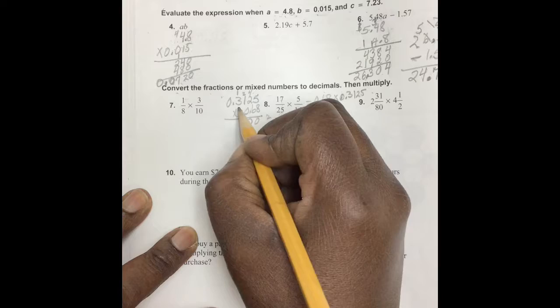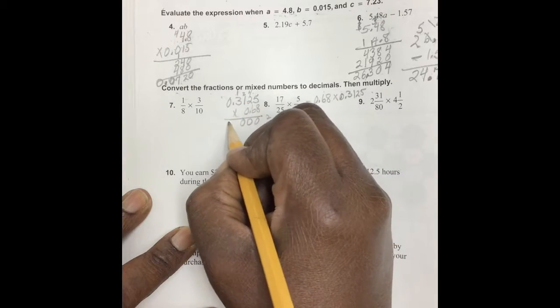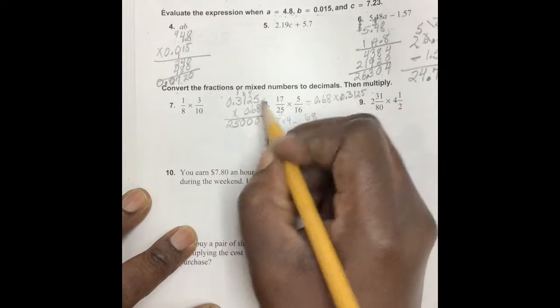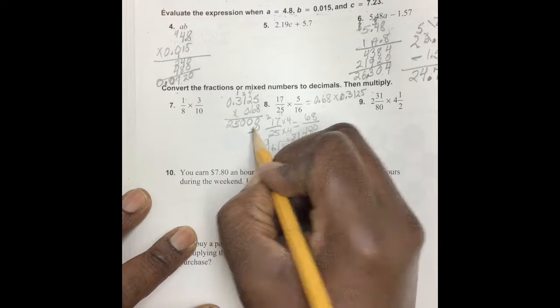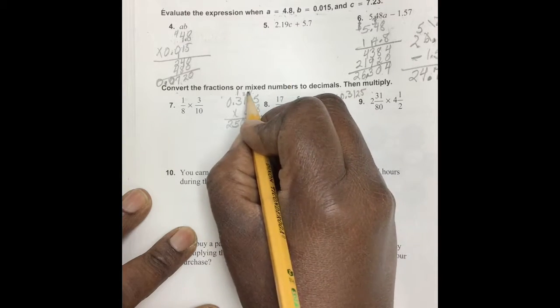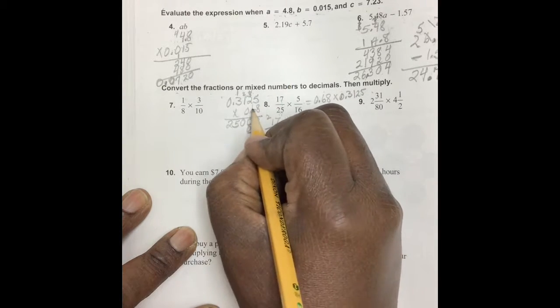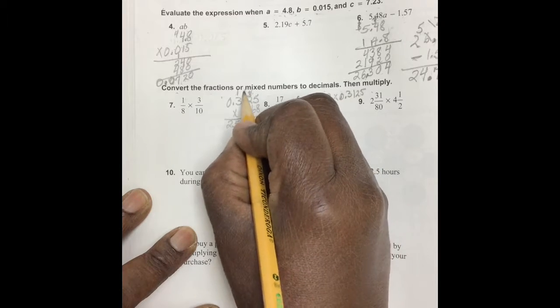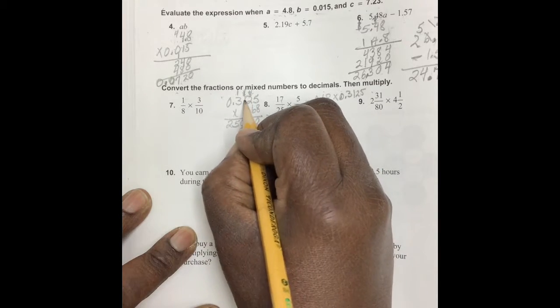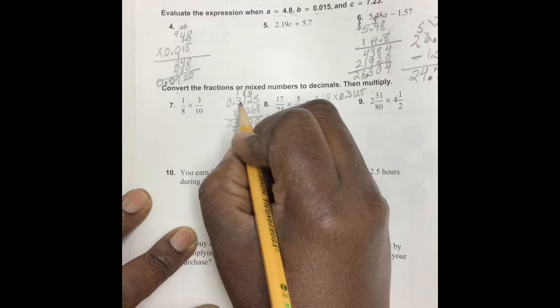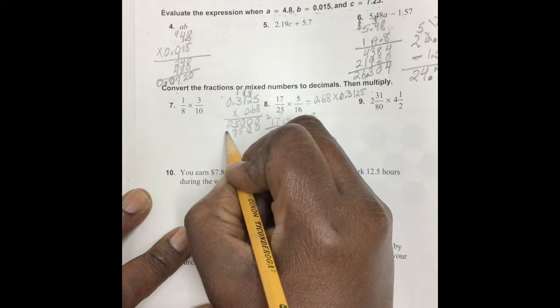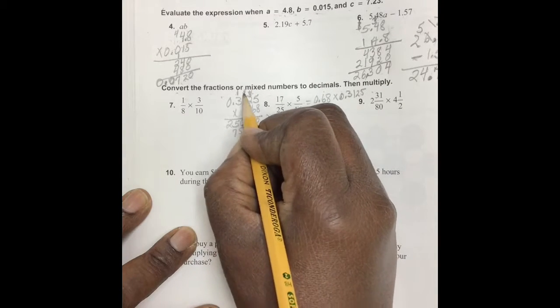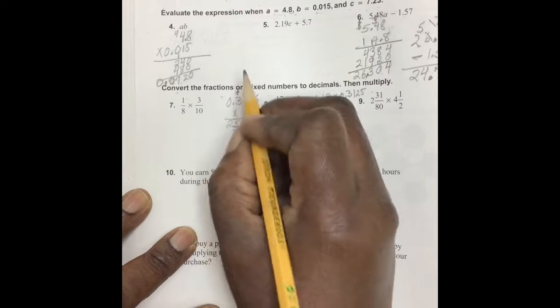That's 24 plus one is 25, and we move over. Six times five is 30, that's 12 plus three is 15, that's six plus one is seven, and then six times three is 18.